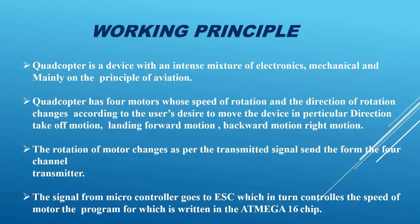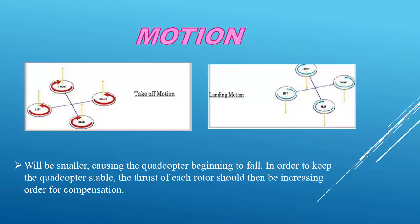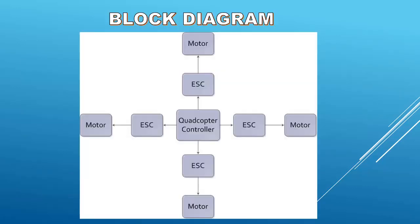If you don't know what a microcontroller is, basically know that an Arduino has an ATmega16 chip. Here is the motion control: for takeoff, two motors go left and two go right. For the landing motion, the left-front and rear motors decrease, causing the quadcopter to begin to descend. To keep the quadcopter stable, the thrust of each rotor should then be increased in order to compensate. This is the block diagram showing the motors, ESC units, and the quadcopter controller — the KK2.1.5 — in the center.